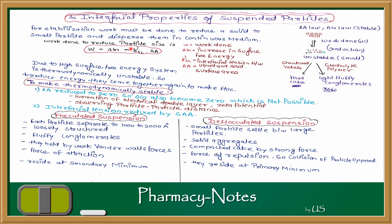As you studied in semester 3 surface tension, for any surface tension or to make small particles, you need to work on your particles. This is known as surface free energy. The more surface free energy required, the more work is needed. Here W is work done, delta G is increase in surface free energy, gamma is interfacial tension between liquid and solid, and delta A is surface area. Due to high surface free energy, the system is thermodynamically unstable.